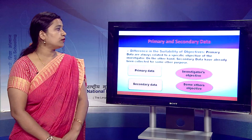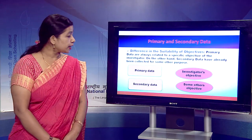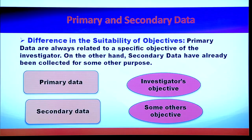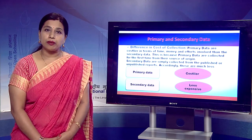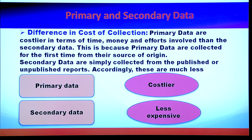Next, on the basis of suitability of objectives, primary data is collected by the investigator for the first time for his own specific purpose, so it is framed for a specific objective. Whereas in secondary data, information gathered by another investigator is being used for a different purpose, so it has less objectivity. Regarding cost of collection, primary data incurs huge cost and is costlier in terms of time, money, and efforts.